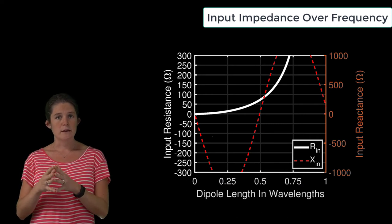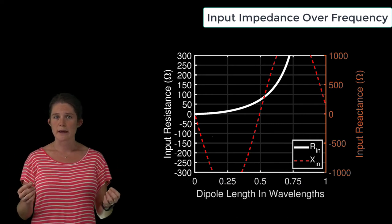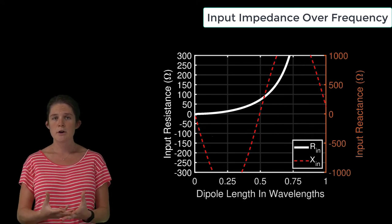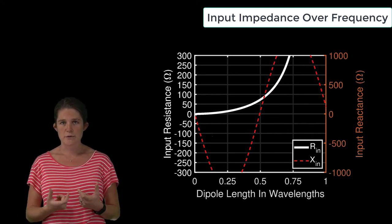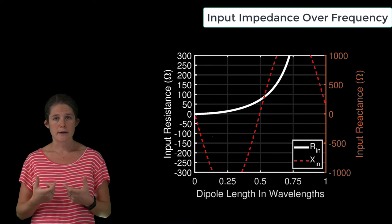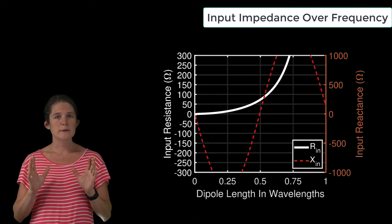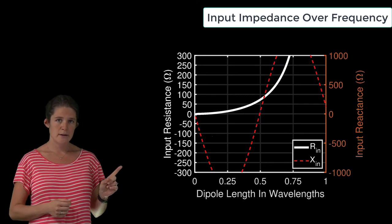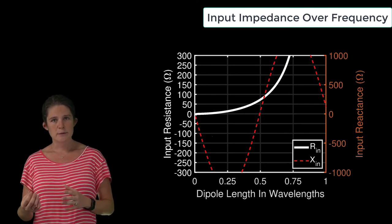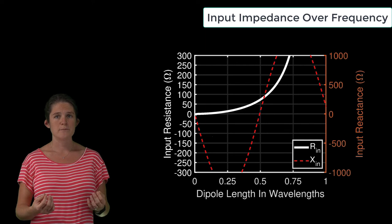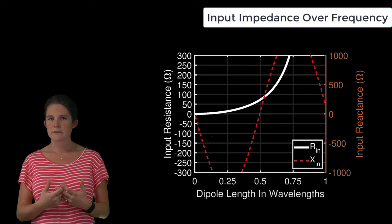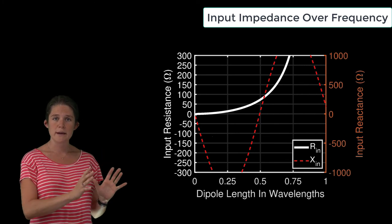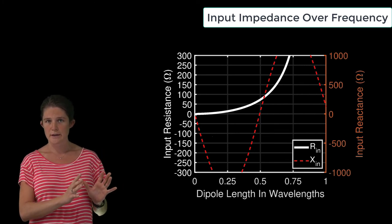That's because, again, neither frequency nor physical length is the most significant factor in determining antenna behavior, but it's the relationship between frequency and physical length that matters. This relationship is directly stated by electrical length, as given here. If I instead plotted the input impedance with respect to frequency, I would also have to specify the length of the antenna in order to communicate the same information that is embedded here by simply plotting with respect to electrical length.